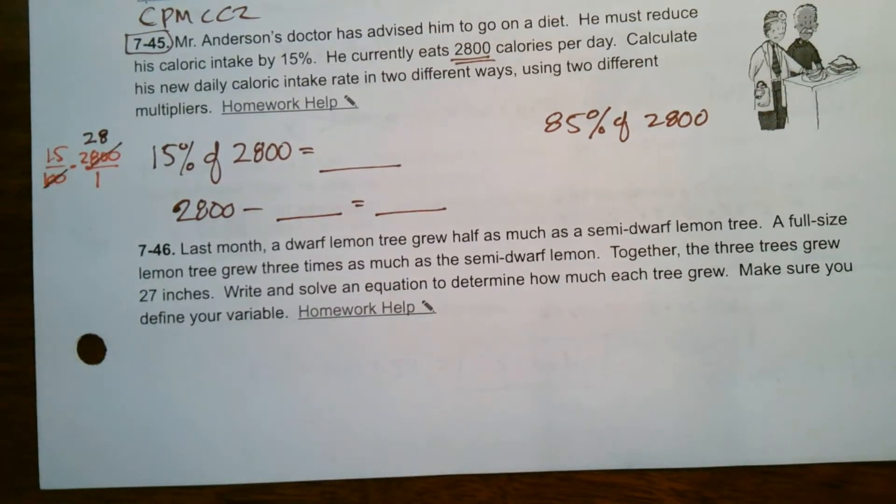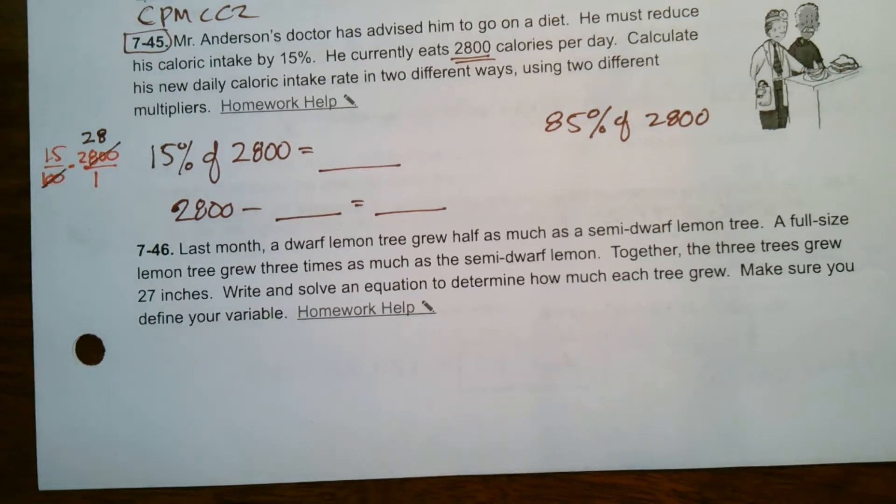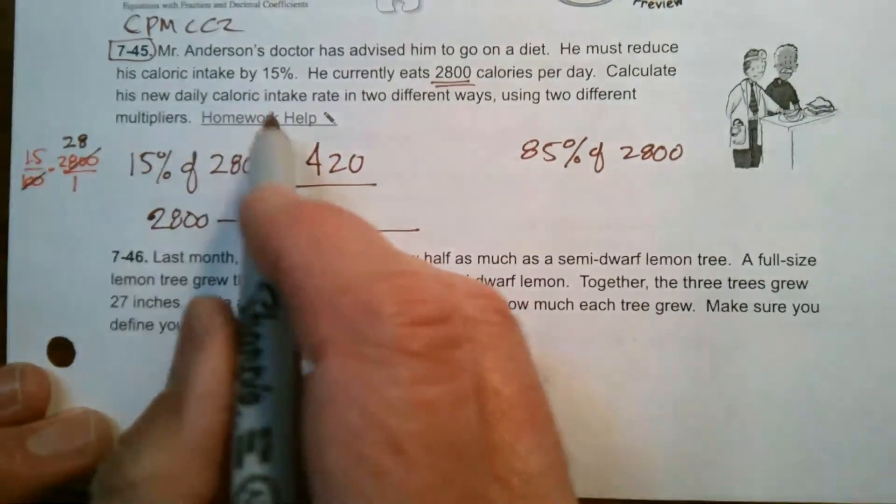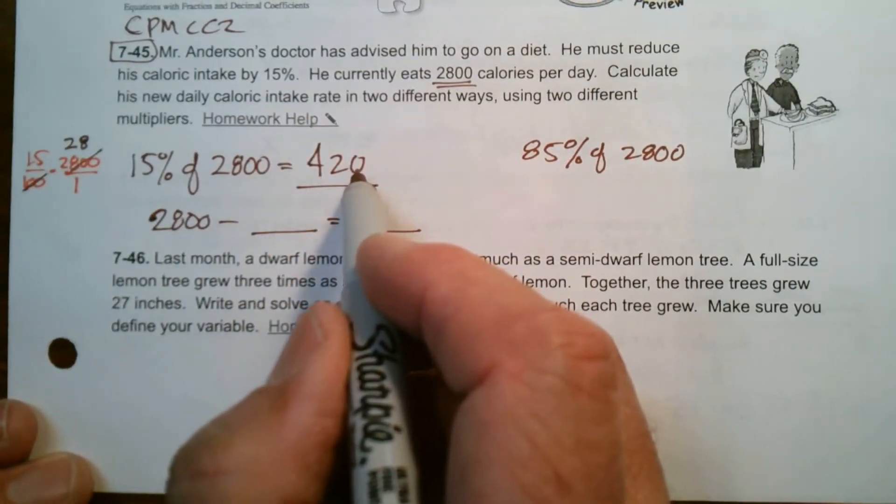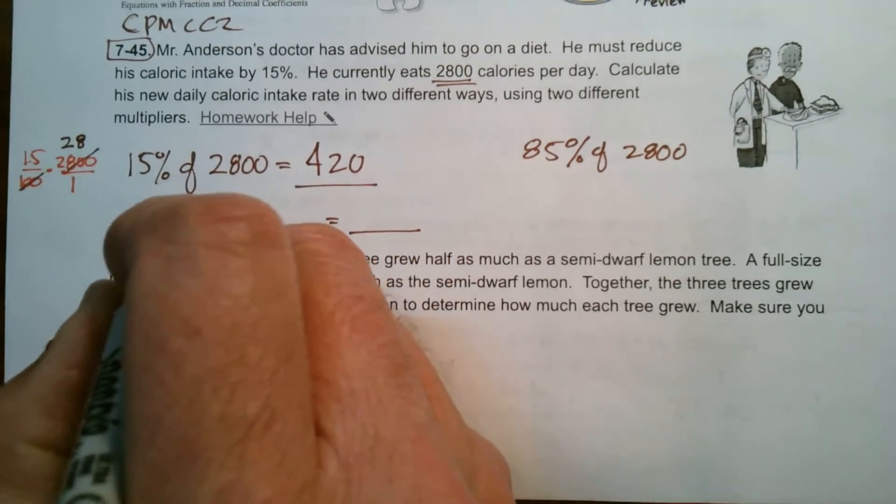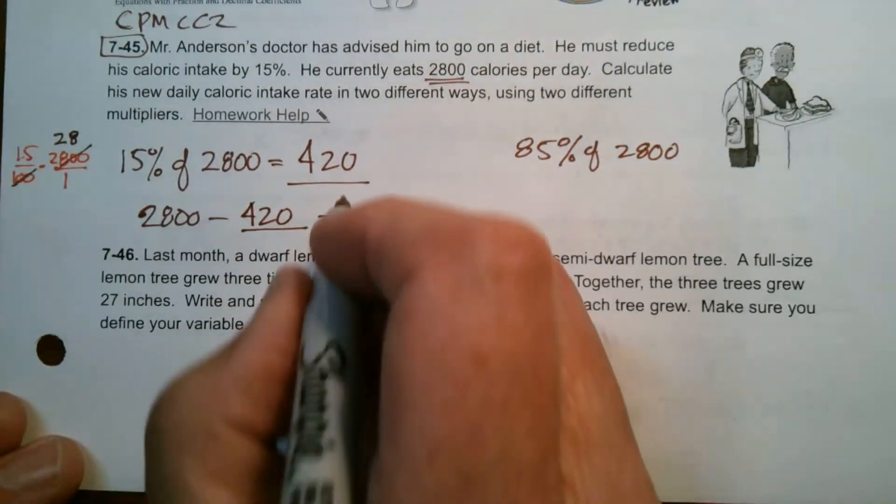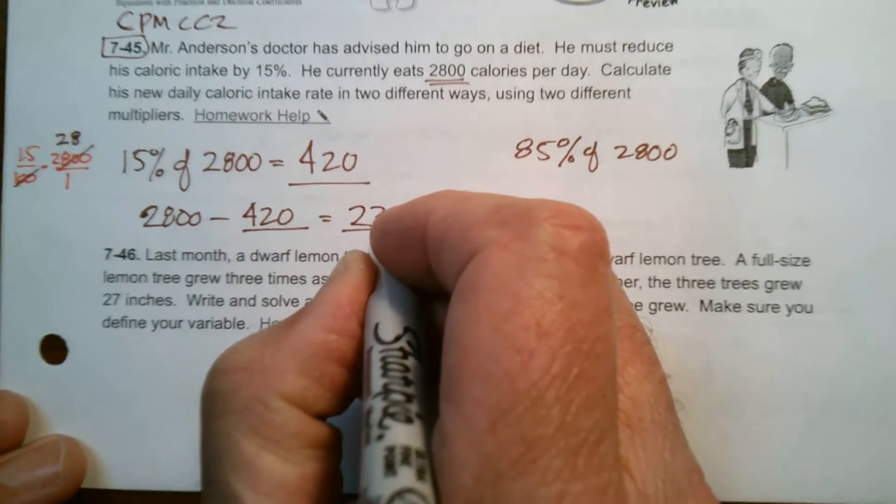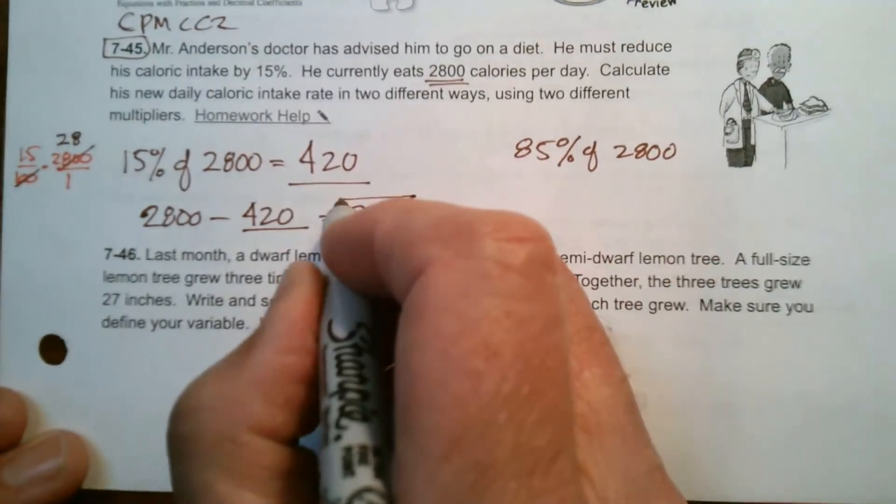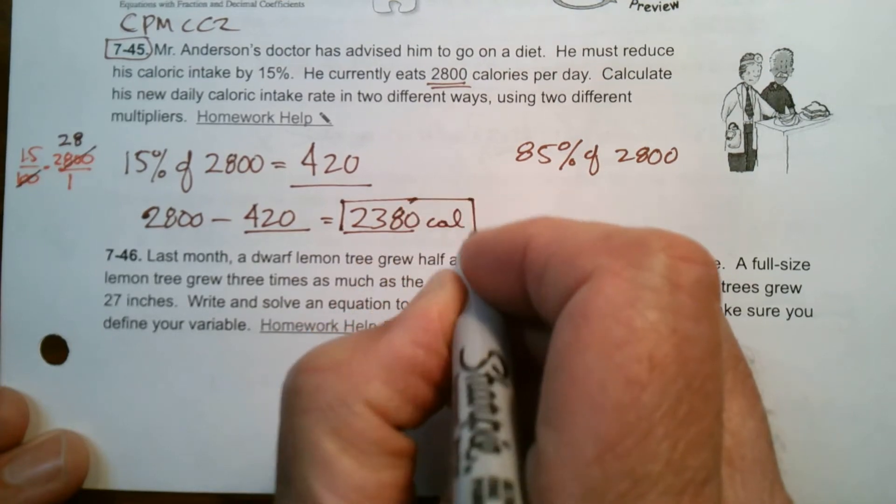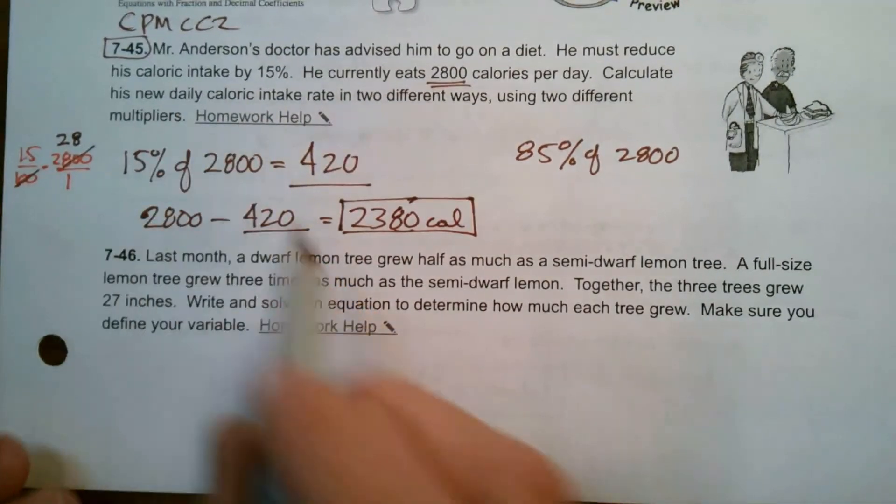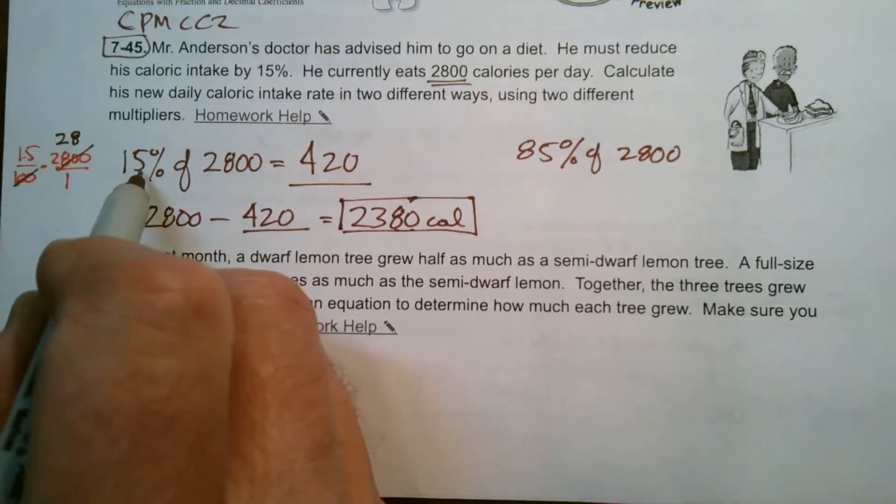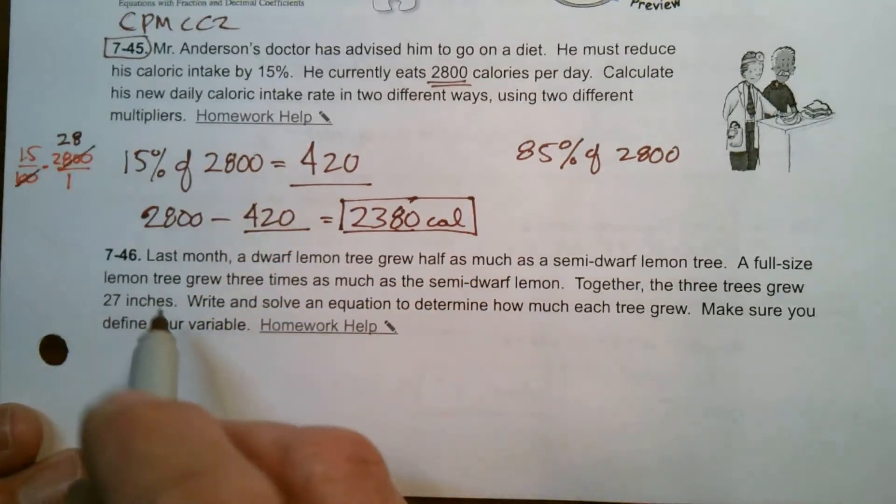So 15 times 28, we can do that however is necessary. So 15 times 28 is 420. So we know that he needs to reduce his caloric intake by 420 calories. So now I just take 2,800 and subtract 420 and that gives me 2,380. So he needs to take in 2,380 calories. That's his new daily caloric intake. So that was one way is finding 15%, getting that number, then subtracting it from the previous total.